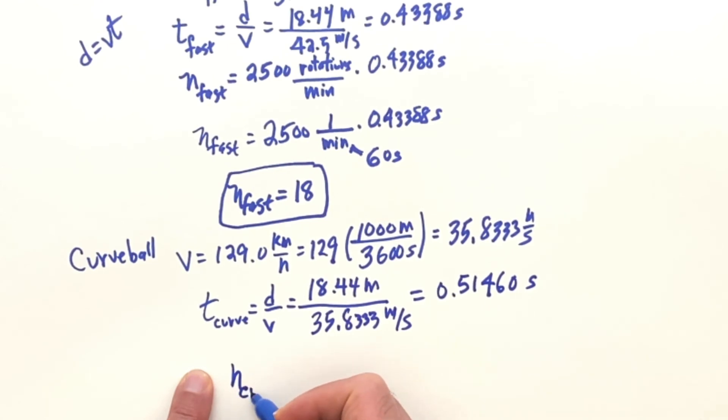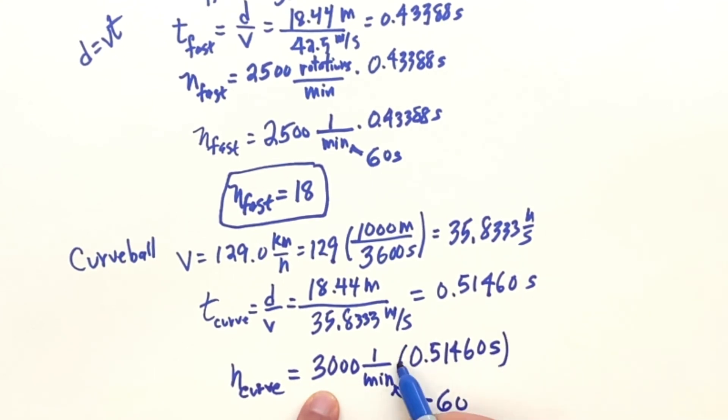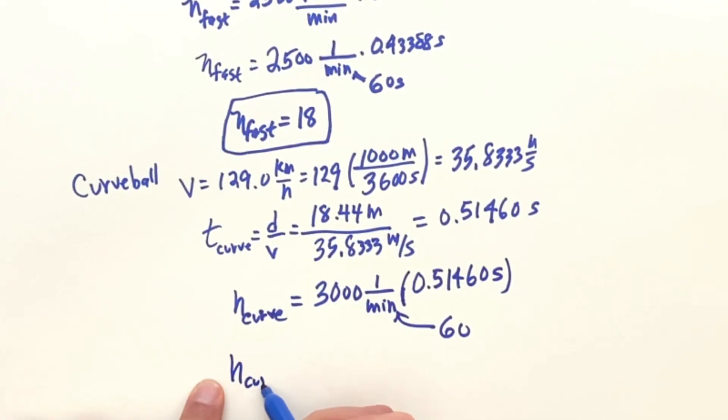And then for the number of rotations for the curve, what you're going to do is use the 3000 RPMs, so 3000 per minute times 0.51460 seconds, and then replace for the minutes the 60 seconds. So multiply the 3000 times the decimal and then divide by the 60, and for the curveball you get 26. Nice problem, application with baseball. Thank you.